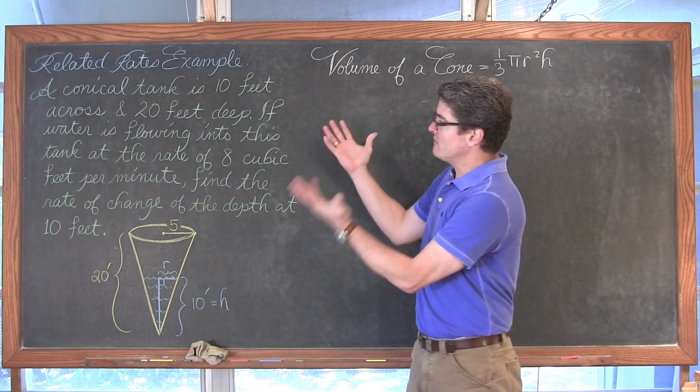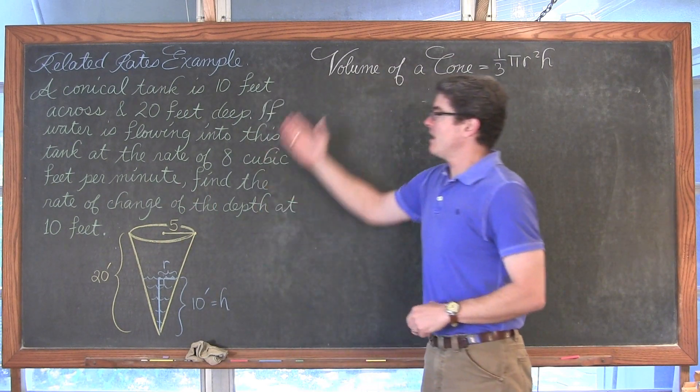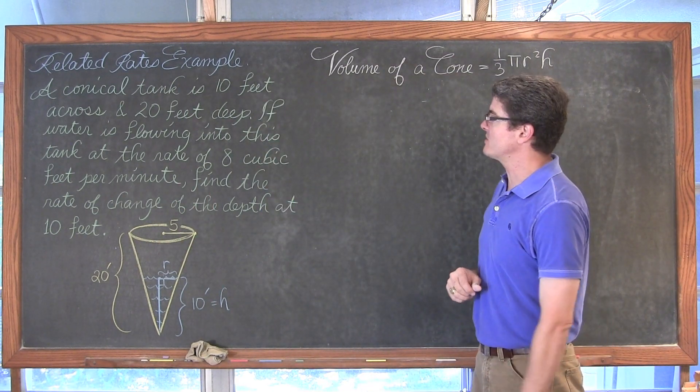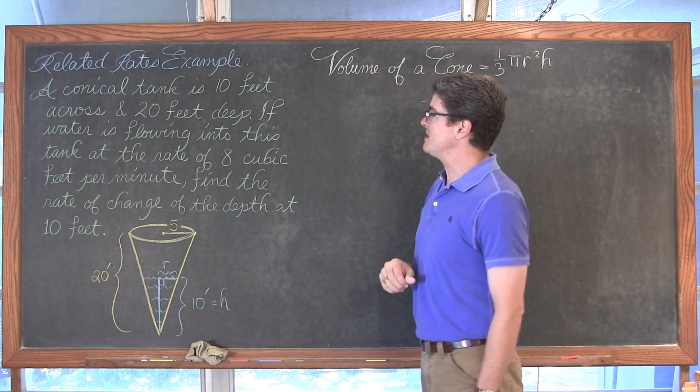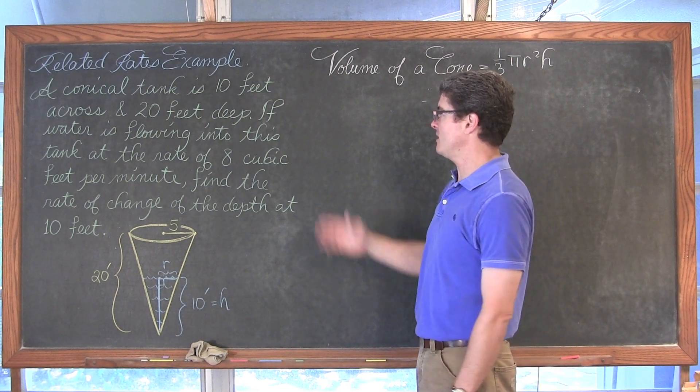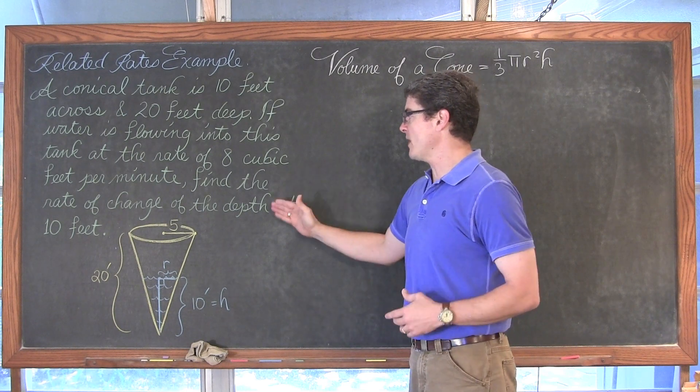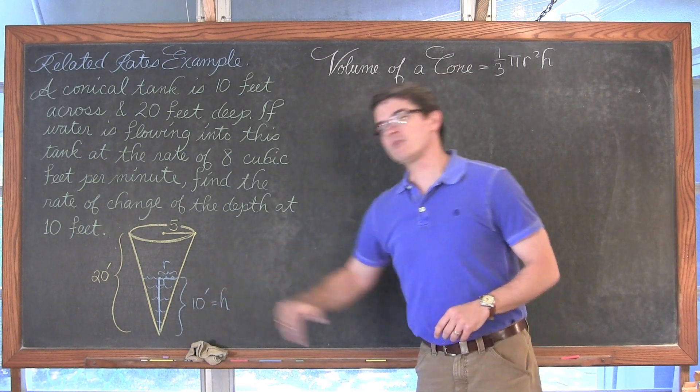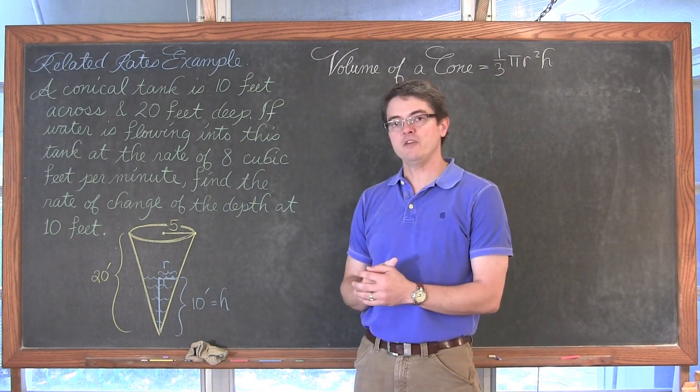It is going to be involving putting some water into a cone. So a conical tank is ten feet across and twenty feet deep. If water is flowing into this tank at the rate of eight cubic feet per minute, find the rate of change of the depth of the water when the water has reached a fixed depth of ten feet.